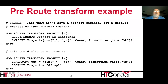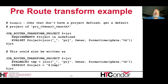Here's an example of a pre-route transform. It has a requirement, so this transform only applies if the job doesn't already have an attribute called 'project'. We use EVAL_SET so that project is set to the string resulting from evaluating job attributes owner and qdate. This could also be written using EVALMACRO into a temp variable and then using DEFAULT to set the project. The DEFAULT command will not change the value of project for a job that already has one — it only sets a value if the job doesn't currently have one.